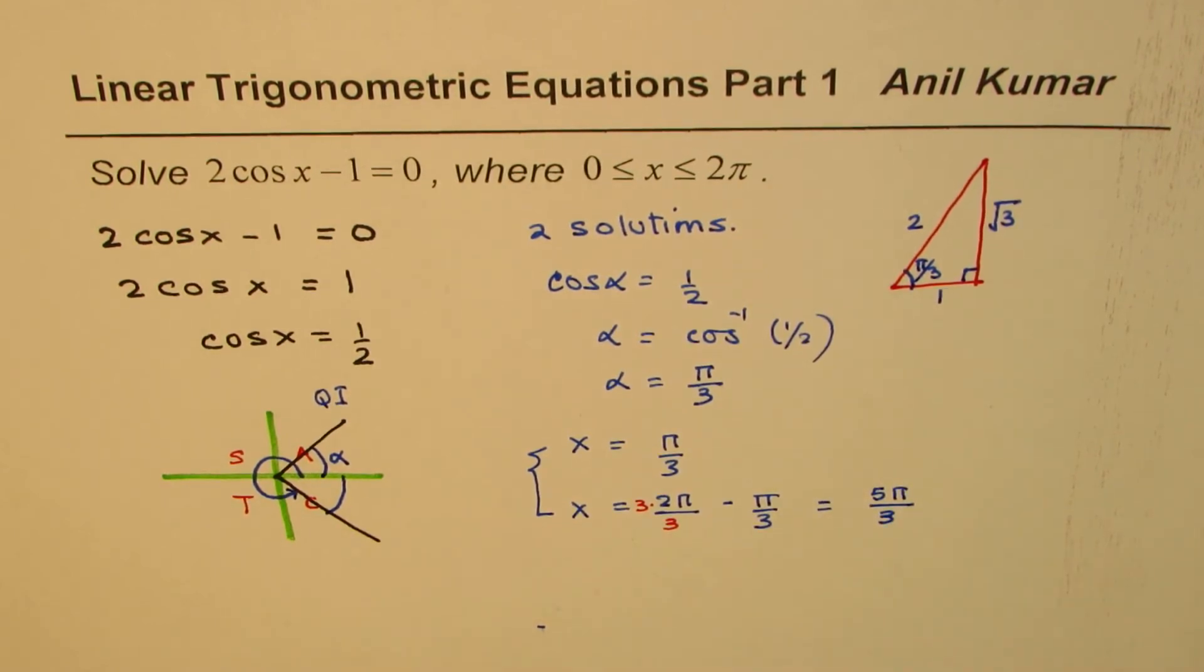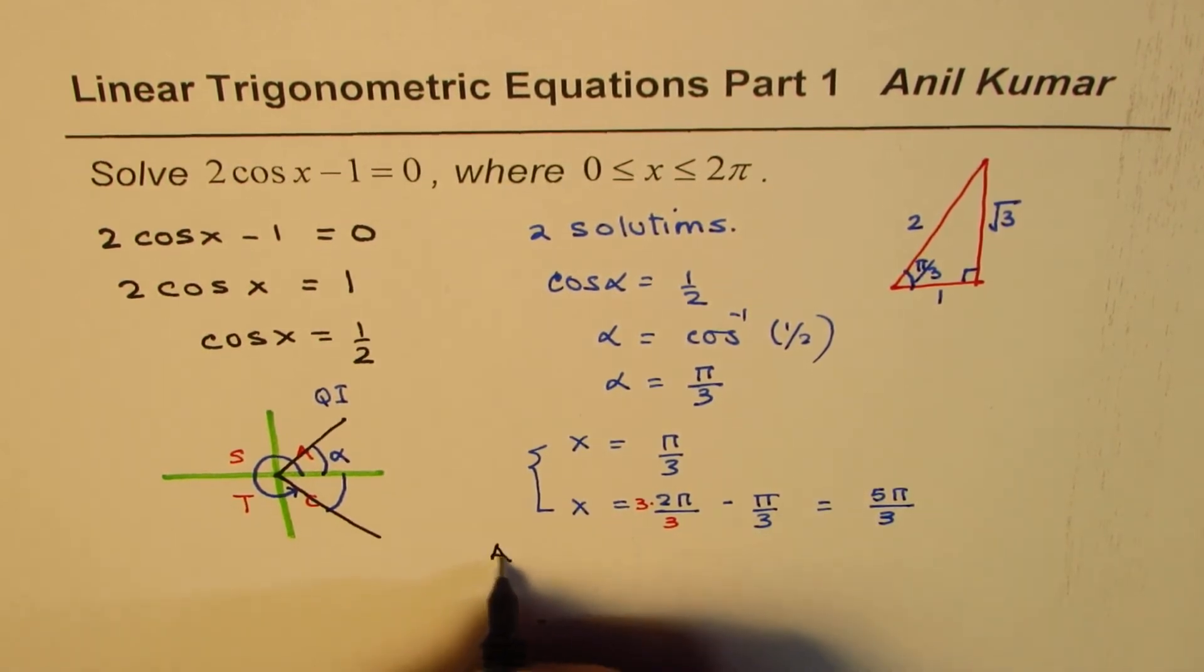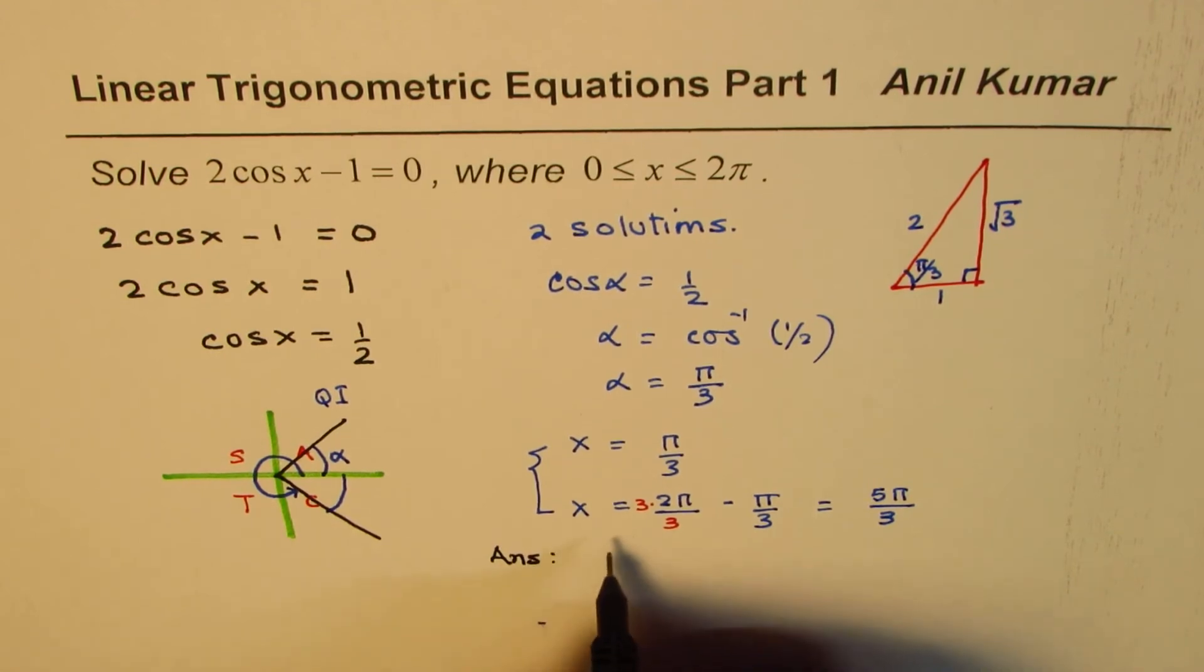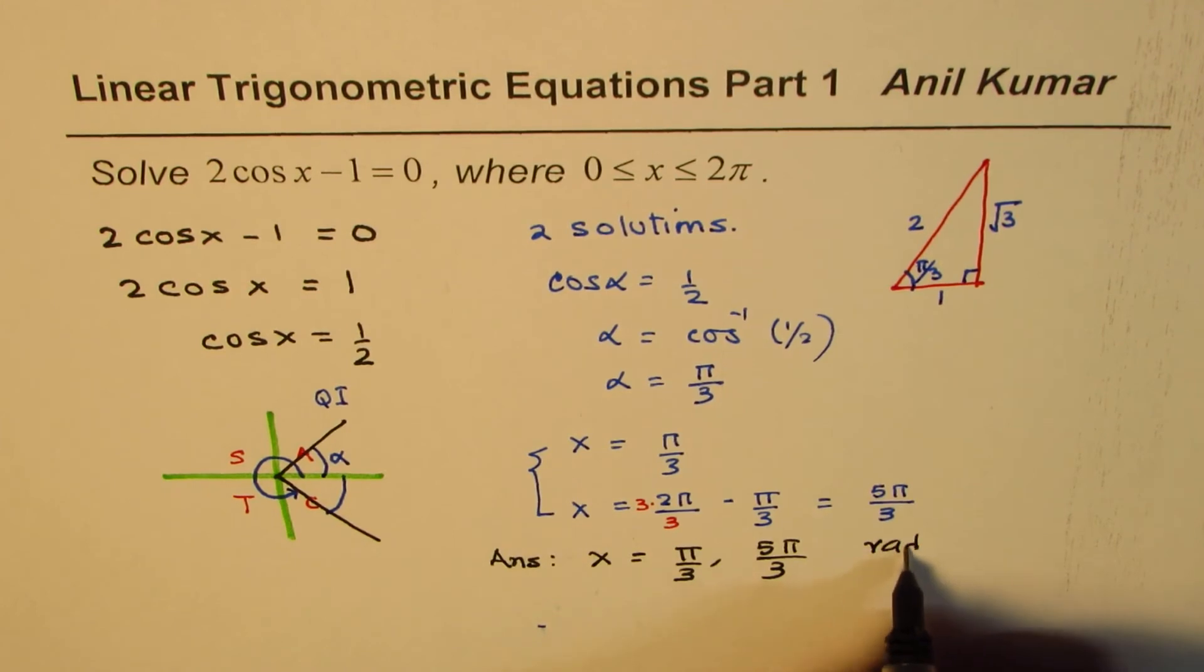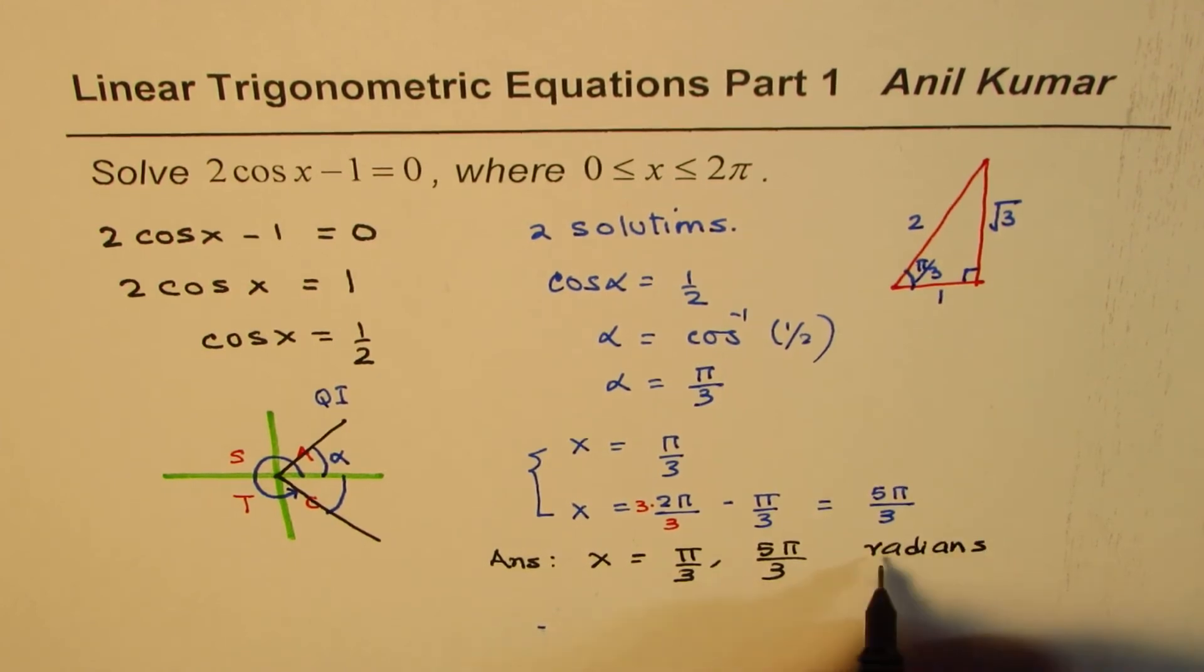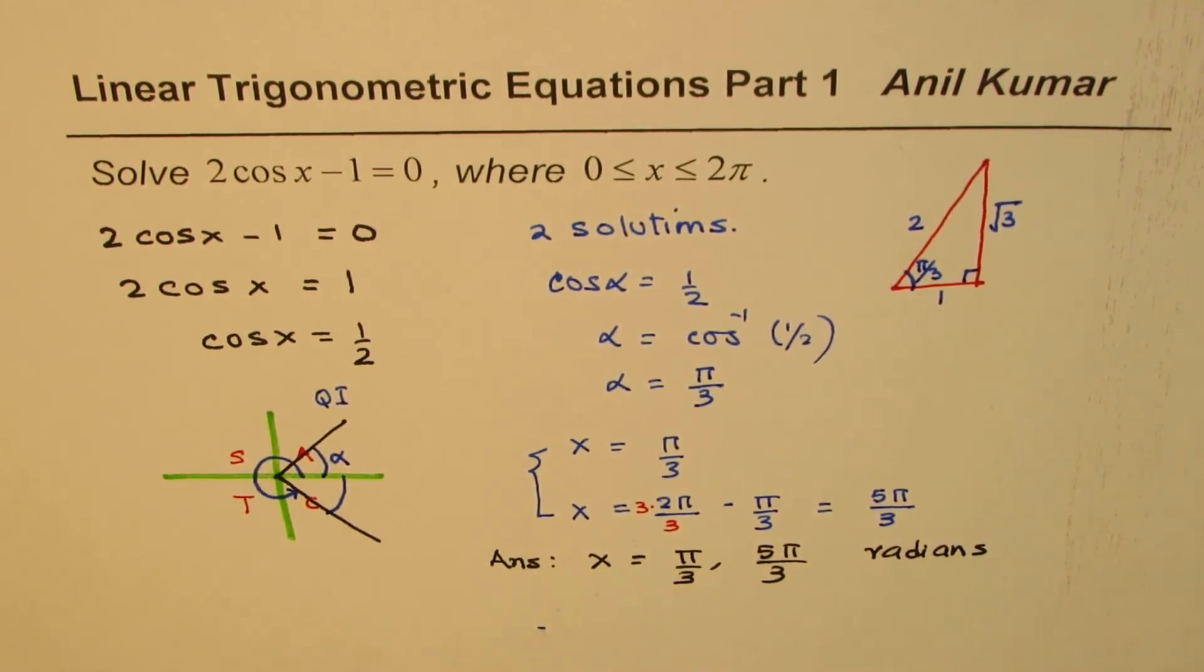And so we can write down our solution as answer for this equation, x should be equal to π/3 and 5π/3. Both units are in radians. Even if you forget radians, it is taken as a default value since radians is the default value for finding the value of x in trigonometric equations.